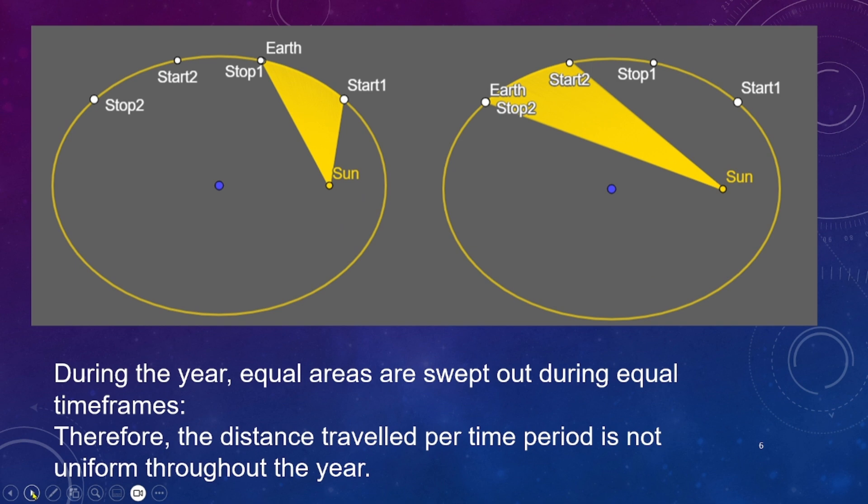Now then, the second law we'd like to mention comes from the fact that during the year, equal areas are swept out during equal time frames. So if I draw a line from the Sun to the Earth, that line will sweep out equal areas in equal time frames. Therefore, the distance traveled per time period is not uniform throughout the year.